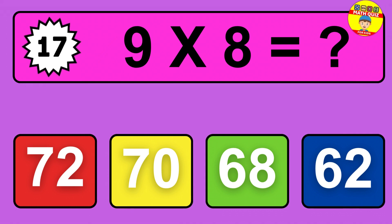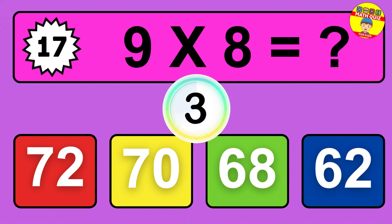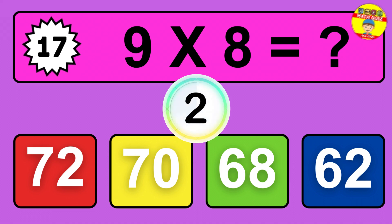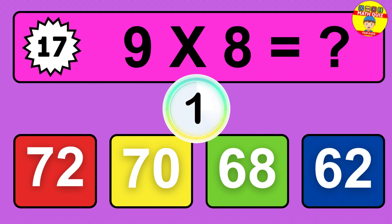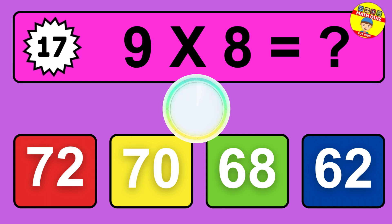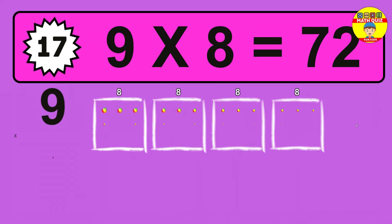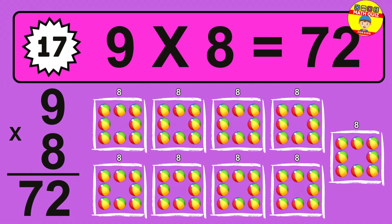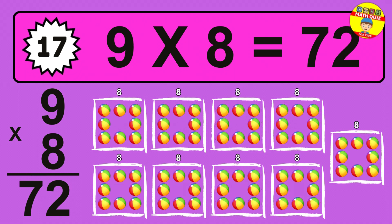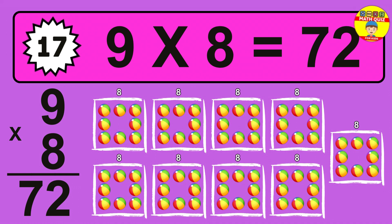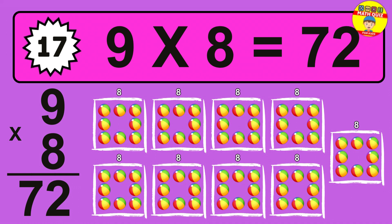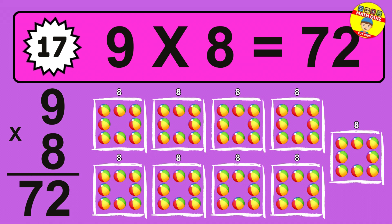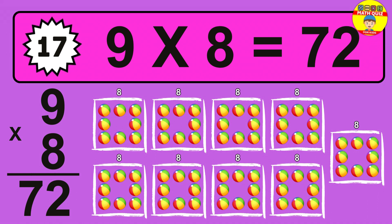Question 17. 9 times 8 equals what? The answer is 72 balls.